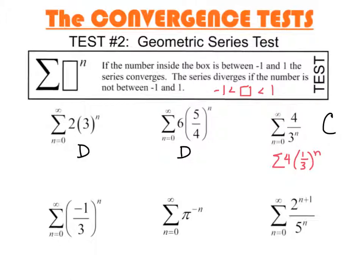But we're looking for this form, where it's a number raised to the nth power. We could have a constant multiplier; we might have to pull a constant out. But that's what we're looking for. So here, negative 1 third raised to the n — well, it's negative, but it's between negative 1 and 1. So this converges.